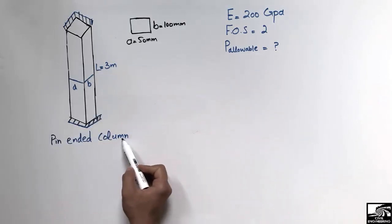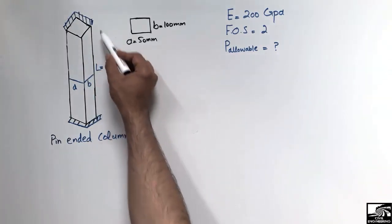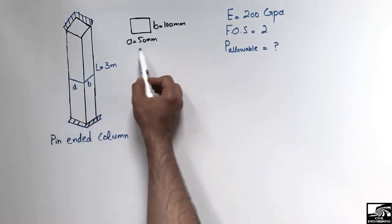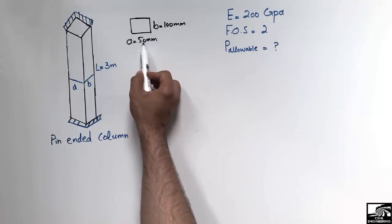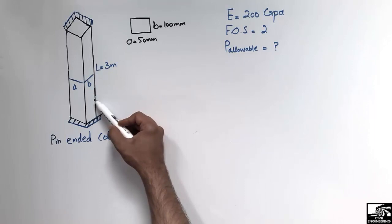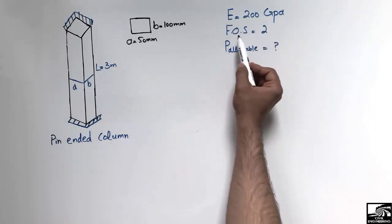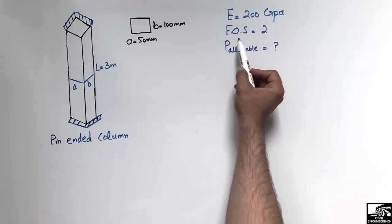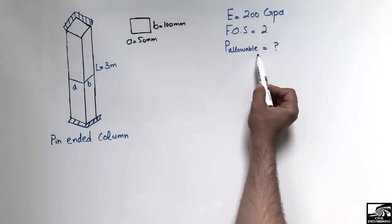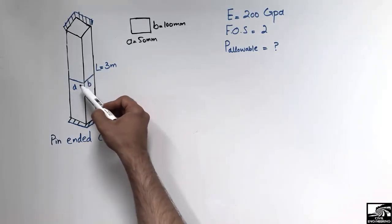A pin-ended column is given to us where both ends of the column are pinned. The length of the column is 3 meters. The cross-section is rectangular with dimension A = 50 mm and B = 100 mm. This is a steel column, so the modulus of elasticity is 200 GPa. The factor of safety is 2.